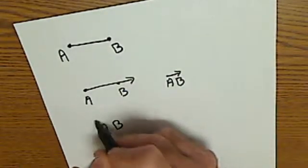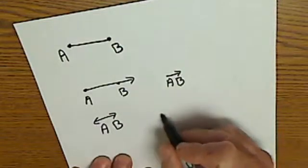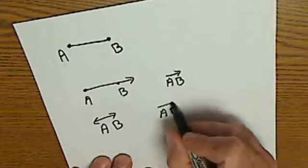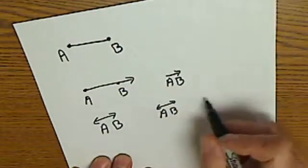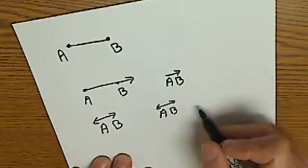Line AB, arrows on both ends, is a line that goes on to infinity in both directions. It's infinite.